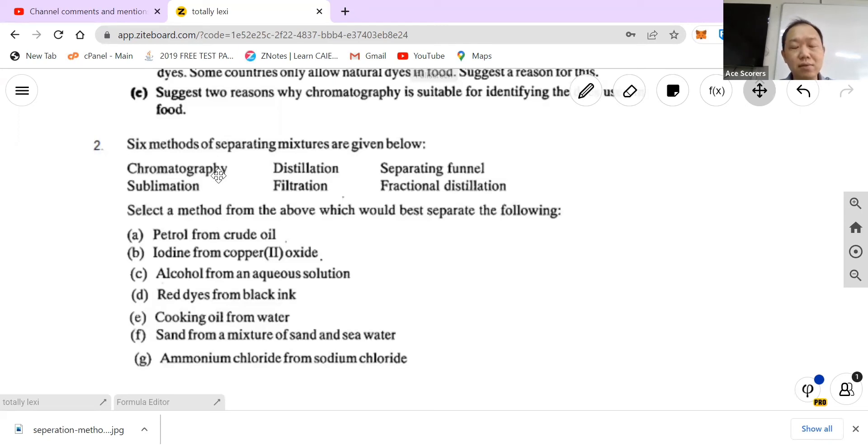So here's another typical type of question which they like to ask. For example, we have six different separation techniques and they want you to select what would be the best. So for example, what is fractional distillation? Iodine from copper 2 oxide, it would be sublimation. Red dye from black ink, we use chromatography. Cooking oil from water, they are immiscible, the oil will float.